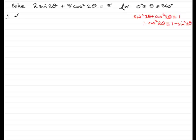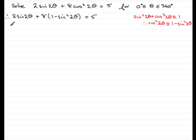So therefore we've got 2sin(2θ) for the first term, plus 8 multiplied by what cos²(2θ) is identical to — which is 1 − sin²(2θ) — and that equals 5. Expanding the bracket: 2sin(2θ) + 8 − 8sin²(2θ) = 5.